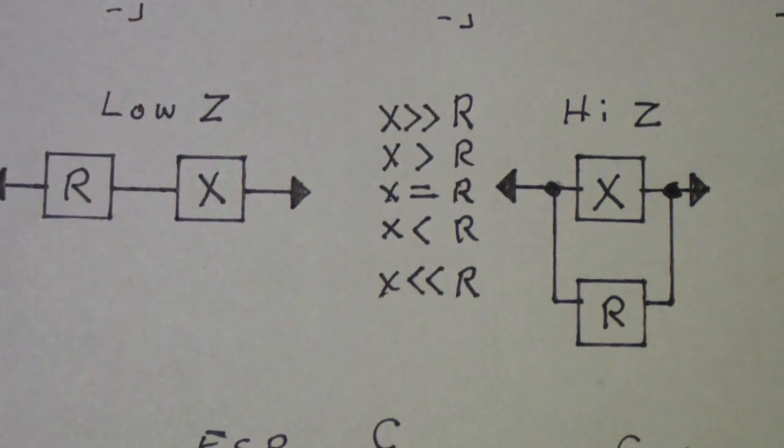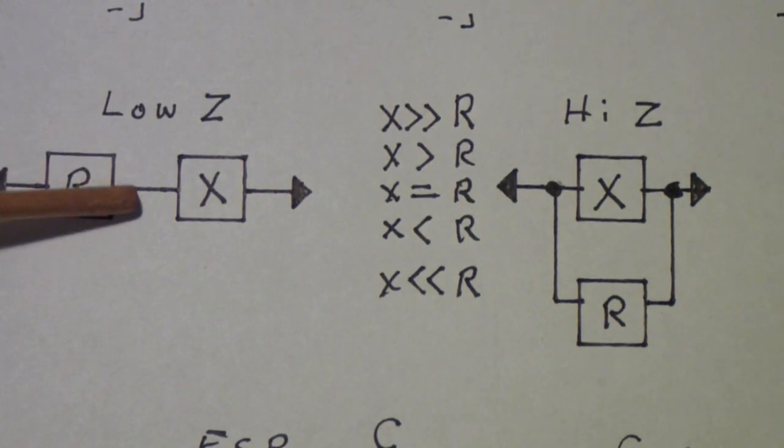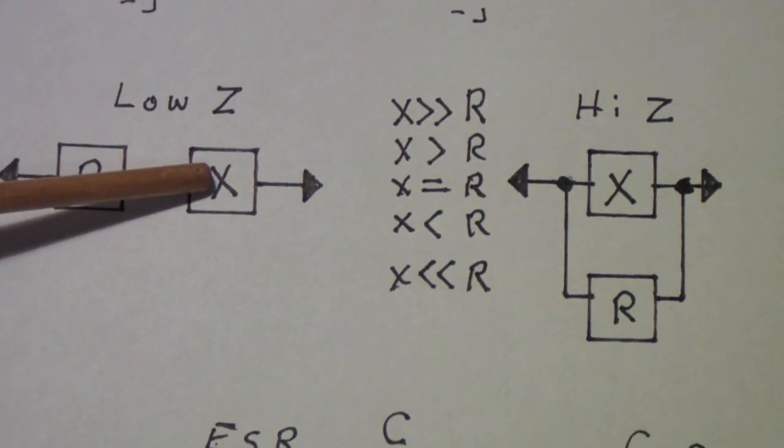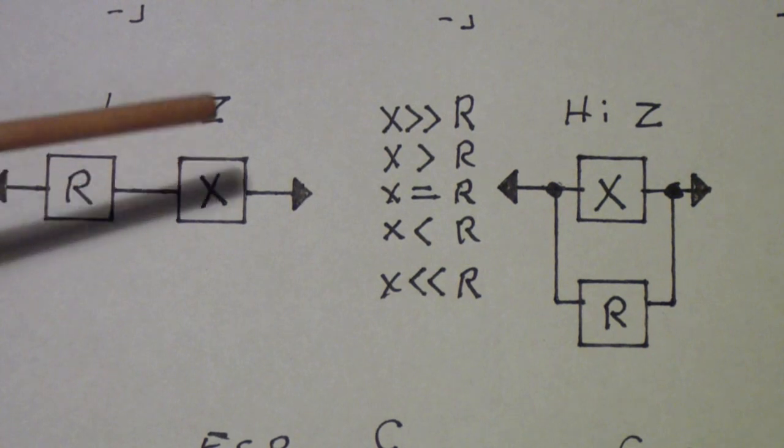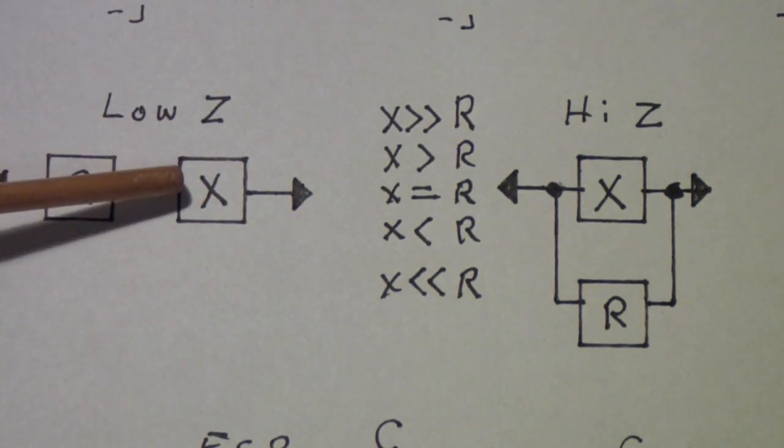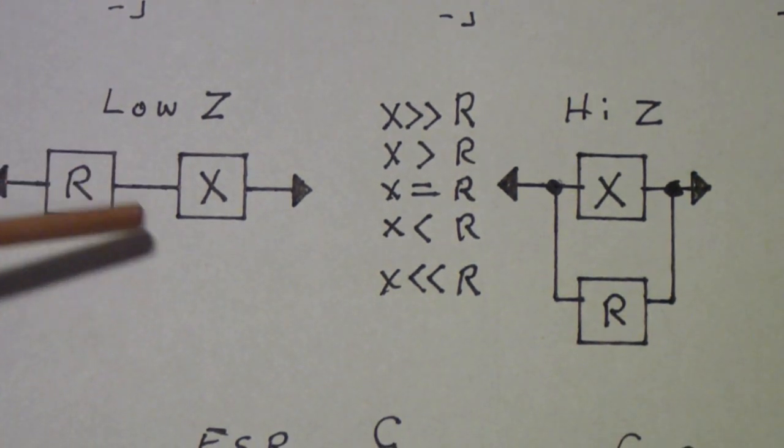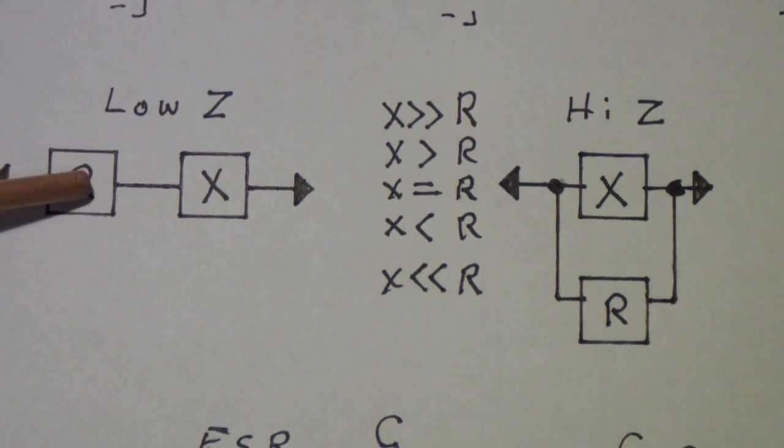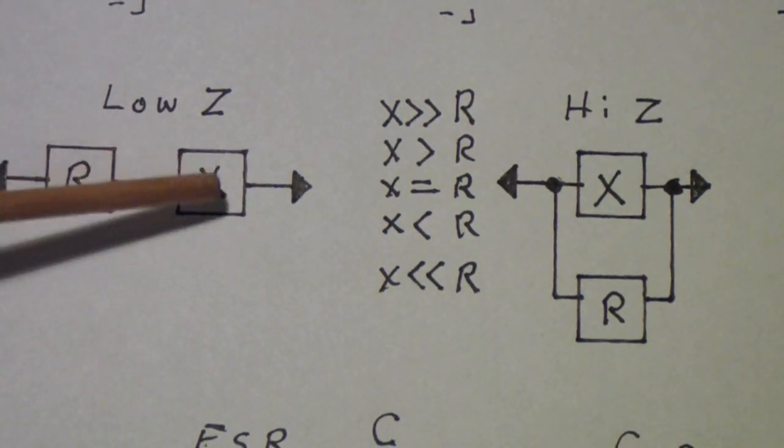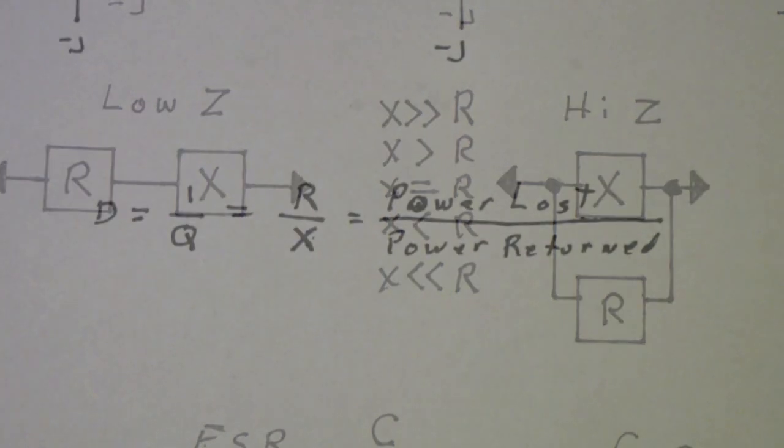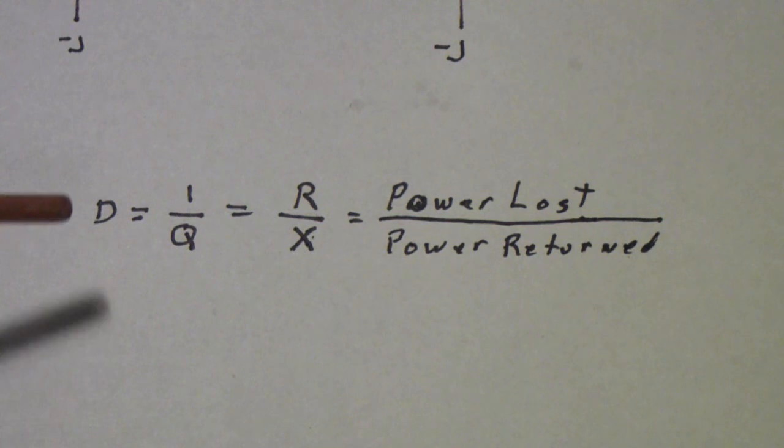So, let's now look at what we call dissipation or Q or basically the power lost. Remember, we talked about the fact that the power that is lost is in the resistive element. So, in this case, it's this R that absorbs power. A pure reactance does not absorb power. The power you put in is returned on the next half cycle. So, you charge up a capacitor and then you discharge it. And if it had no equivalent series resistance, you would get back exactly the same amount of power as you put in.